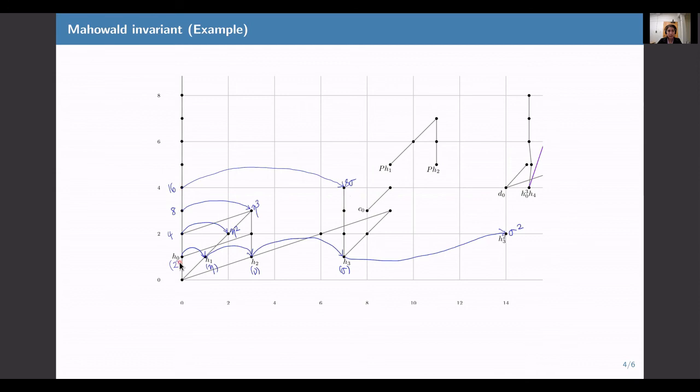To illustrate this, I'll give some examples. On this slide, I have a picture of the beginning of the classical homotopy groups of spheres, and I've indicated a few values of the classical Mahowald invariant. For example, the Mahowald invariant takes 2 to eta, it takes eta to nu, it takes nu to sigma, it takes sigma to sigma squared, and so on.